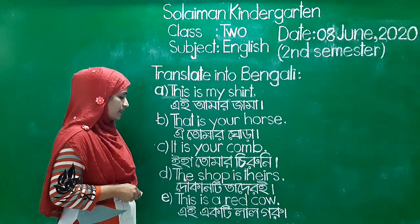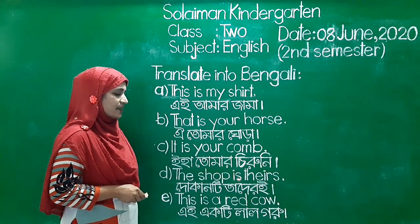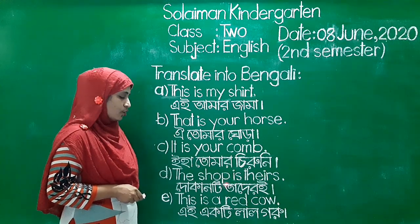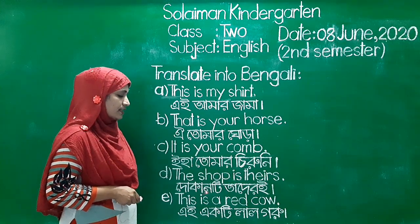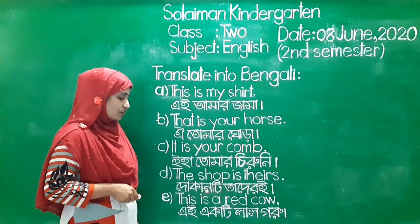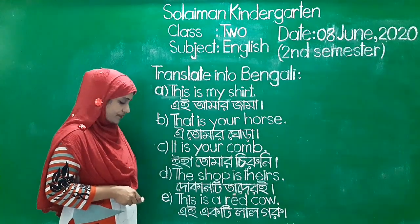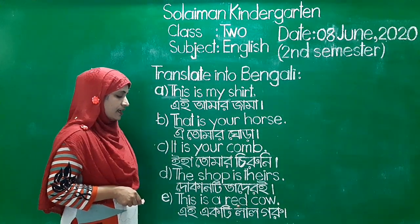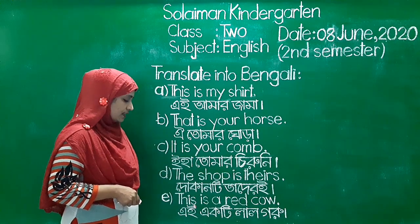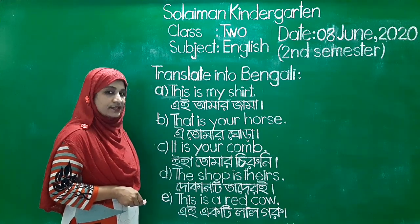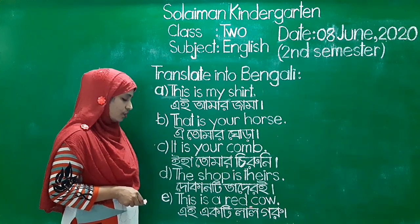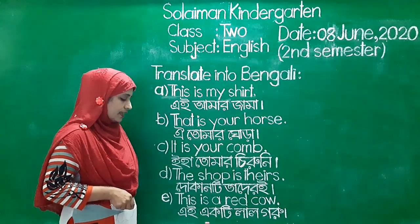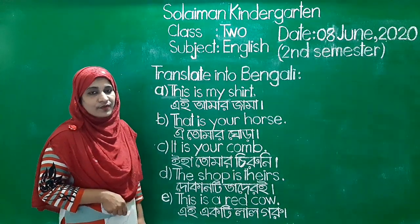D number: The shop is theirs. Arthro, dhokanti tathiri. E number: This is a red cow. Arthro, eha ti lang guru.